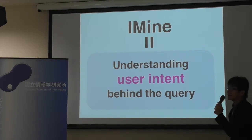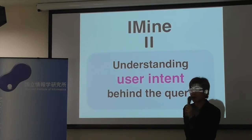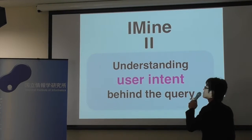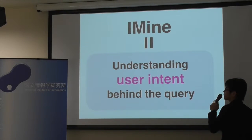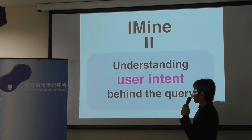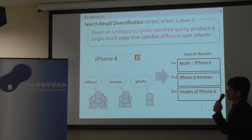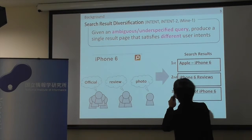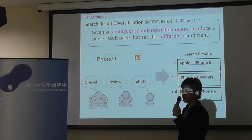I-mine-2 is a successor task of I-mine at NTCIR level. The goal of our task is to understand the user intent behind the query. In I-mine and our prior tasks, Intent and Intent-2, we tackled a very well-known problem in IR called search result diversification.